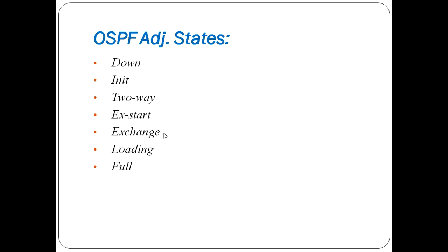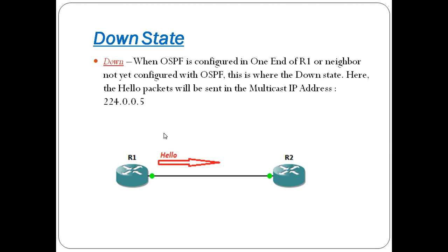Let's talk about the down state. Consider two routers on OSPF. In R2, OSPF is not yet configured. If we finish the configuration on R1, it initiates a hello packet sent to multicast asking 'who is the neighbor?' In this state, there is no neighbor information, so the name is down state.